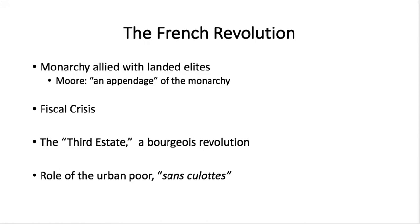We're going to cover things like the balance of class forces — you get the monarchy allied with landed elites, which Barrington Moore refers to as an appendage of the monarchy. We'll look at a fiscal crisis, the third estate, which becomes the bourgeois revolution, and the role of the urban lower sort. In France, they're called the sans-culottes. We'll also show a short video from Professor William Nelson explaining how the revolution led to the acceleration of capitalist development.